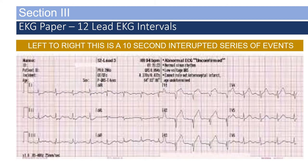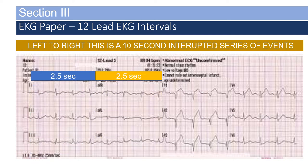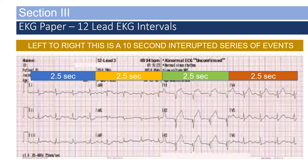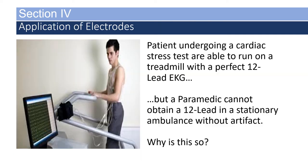The 12-lead EKG is usually divided into four blocks. Sometimes there is a 10-second strip with one or two leads along the bottom, though most EMS services don't use that style. Each block is 2.5 seconds in time, for a total of 10 seconds of recording. You may ask: if a patient on a cardiac stress test can run on a treadmill with a perfect 12-lead, but a paramedic can't obtain a clean 12-lead in a stationary ambulance, why? The answer is skin prep.